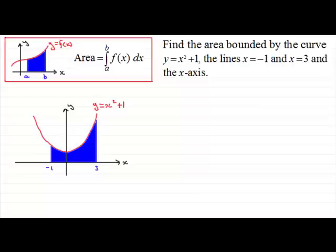Now, to work out that area then, the area is going to equal, according to the formula, the integral of our curve, which is x squared plus 1. We've got a couple of terms here, so we need to put that in brackets. We integrate that with respect to x and the limits go from minus 1 to 3.